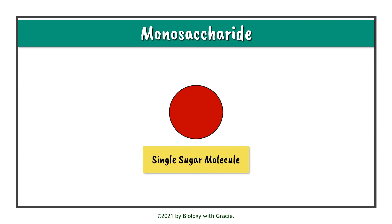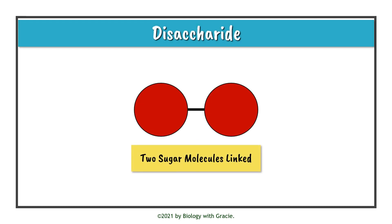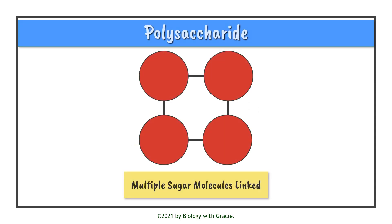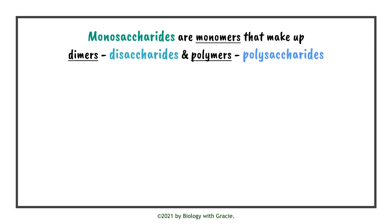A monosaccharide is a single sugar molecule. A disaccharide is two sugar molecules — so two monosaccharides — linked together. And a polysaccharide is multiple sugar molecules linked together, so multiple monosaccharides or disaccharides. Monosaccharides are the monomers that make up disaccharides, which are the dimers, and polysaccharides, which are polymers.